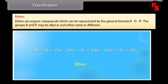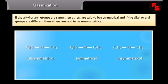Ethers are organic compounds which can be represented by the general formula ROR'. The groups R and R' may be alkyl or aryl, either same or different. If the alkyl or aryl groups are the same, then ethers are said to be symmetrical; if they are different, then ethers are said to be unsymmetrical.